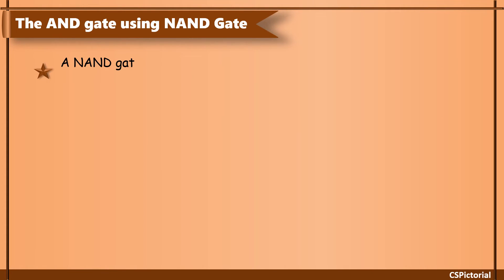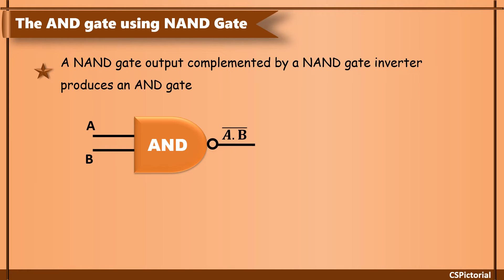The AND gate implementation using NAND gate is done by connecting one NAND gate output A dot B bar to another NAND gate. The output is then A dot B as that of an AND gate.